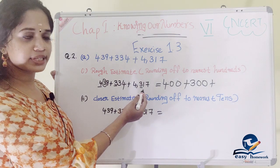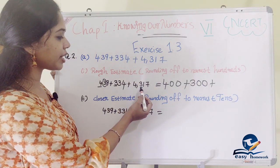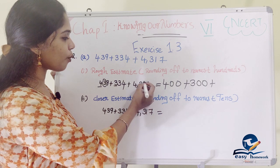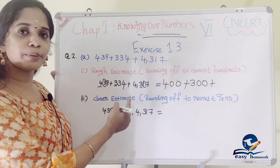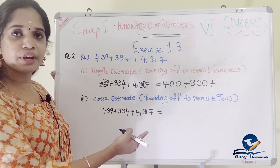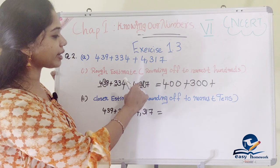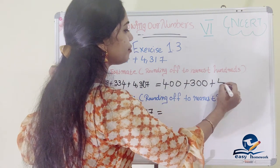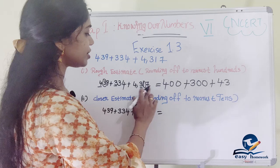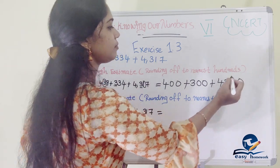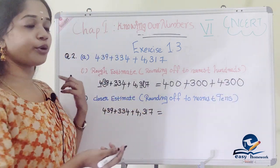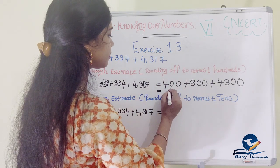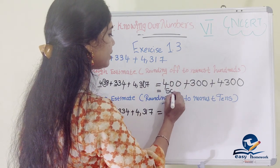4,317 is 4,317. In the third position, 1 is less than 5, so the last two digits will be 0, giving us 4,300. Then we add: 400 plus 300 plus 4,300 equals 4,380 approximately. So the rough estimate answer is 5,000.